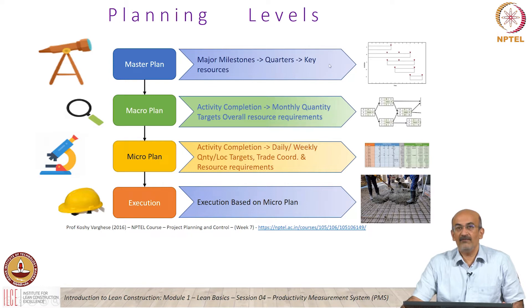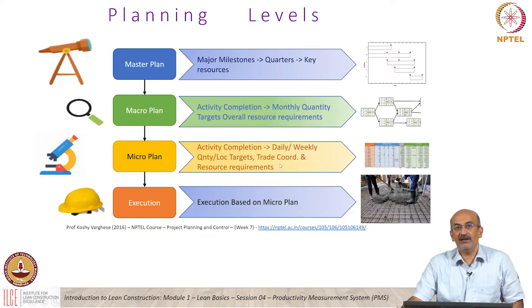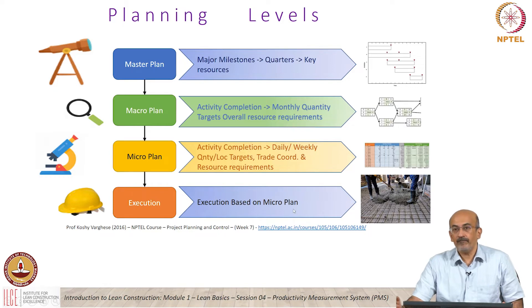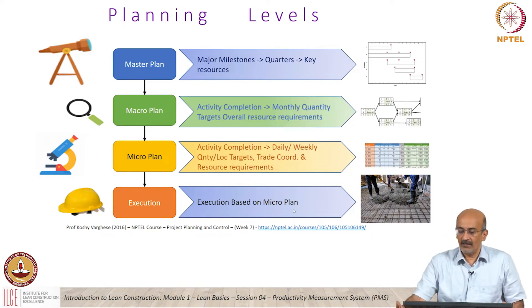From a timeline perspective, we look at quarterly planning at the master plan level, monthly at the macro plan level, weekly at the micro plan level, and daily at the execution level. This is how we look at the planning stages.